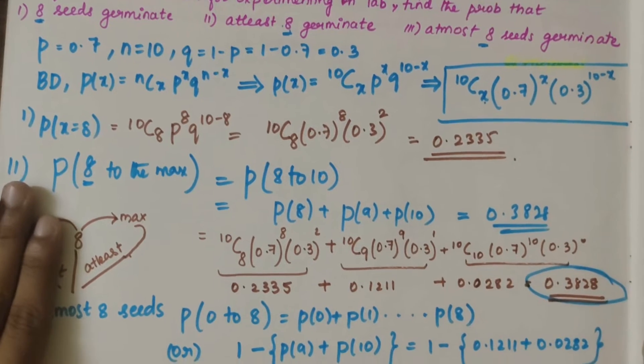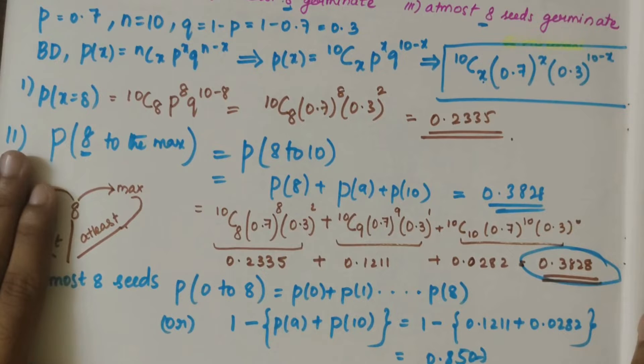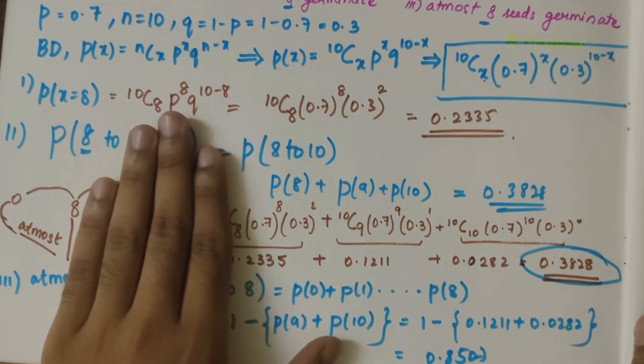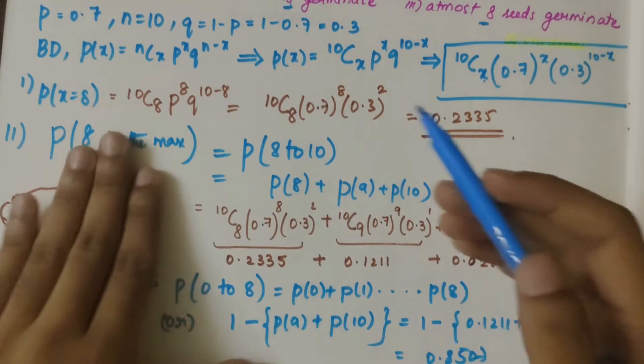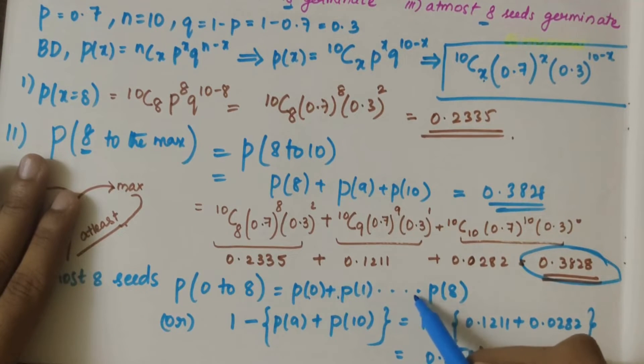Now we have at most 8 seeds. At most 8 seeds means from 0 to 8, that is utmost. So you'll start from p(0), p(1), p(2), p(3), so on till p(8), or you can do 1 minus p(9) and p(10). This is better, right? So 1 minus p(9) and p(10).